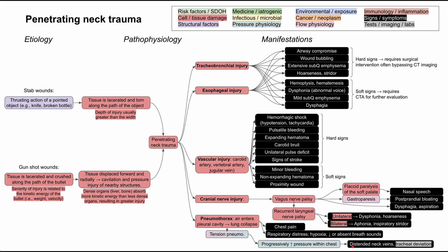Tension pneumothorax can be quite severe. If the pressure in the chest gets really high, it will block blood returning to the heart, and you'll notice distended neck veins. The heart is unable to expand normally due to the elevated intrathoracic pressure. You may also notice tracheal deviation on exam or on chest x-ray. If the pressure is extreme and blood return to the heart is severely blocked, this can lead to obstructive shock in very severe cases.